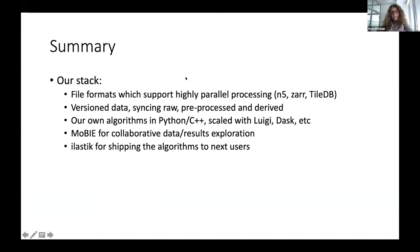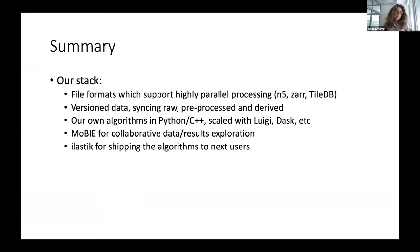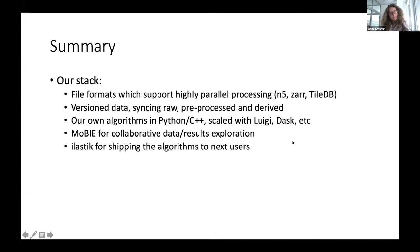To summarize the whole stack: what we need to work on very large data is file formats that support highly parallel reading and writing — which right now are N5 and Zarr mostly. We need data to be versioned so we can sync between what you do, what we do, and what people do in post-processing. Then there is our own algorithms in Python and C++, which we scale up to run on clusters or the cloud with our own tools or with Luigi and Dask. Then there is MOBI developed by Christian for exploration of data and results. And once a project is finished, we can wrap the algorithm into Elastic for the next users to use. That was mainly what I wanted to show — how algorithm development on very large data happens in a highly collaborative manner.